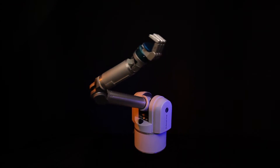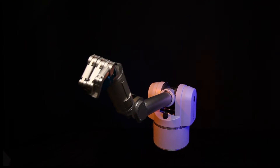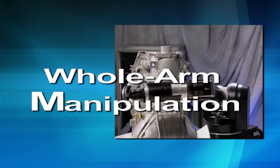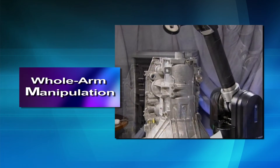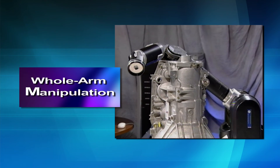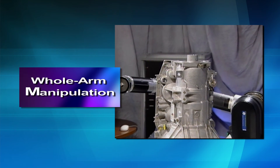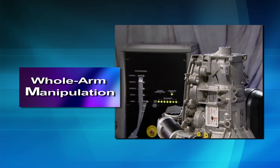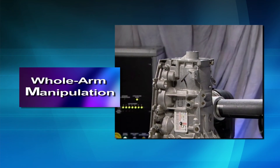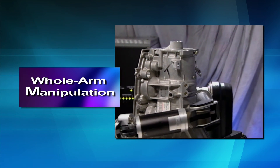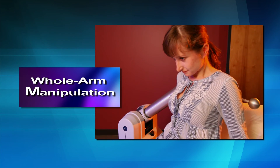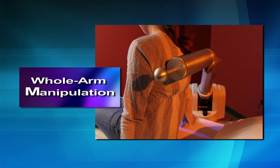The benefits of kinematic redundancy and back drivability are multiplied when combined with the powerful concept of whole arm manipulation, where the intermediate links double as force-controllable surfaces. The WAM arm is able to control forces over its whole structure. By applying this simple concept, the arm can manipulate objects larger than itself, thereby extending its payload-to-weight ratio beyond that of any other robot.